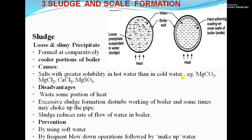How can we overcome sludge? First, by using soft water — we have to treat the boiler water outside the boiler by external treatment. Second, by frequent blow down operation followed by makeup of water. In blow down operation, we replace the residue water containing a large amount of sludge with fresh water.